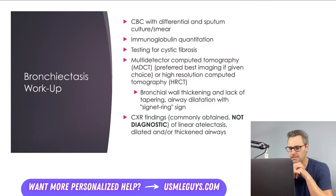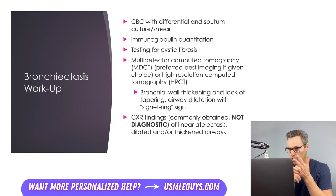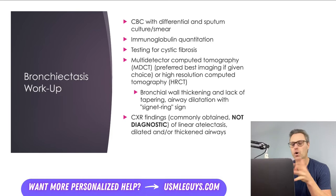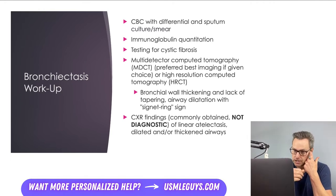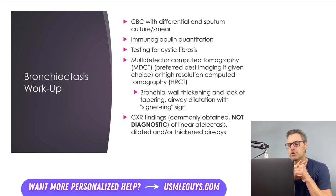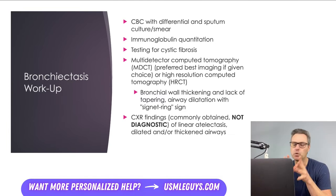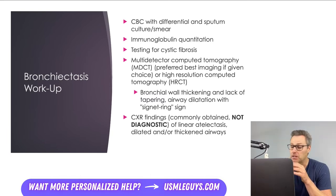The workup for bronchiectasis includes a CBC with differential to assess for leukocytosis, and a sputum culture and smear to identify the causative pathogen. Quantitative immunoglobulin testing should be performed to ensure the prolonged infection is not caused by immunodeficiency. In a young person, test for cystic fibrosis. For imaging, multi-detector CT or high-resolution CT are the modalities of choice, with multi-detector CT being preferred.